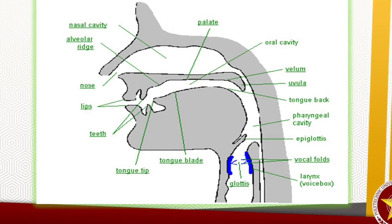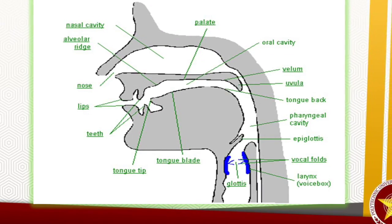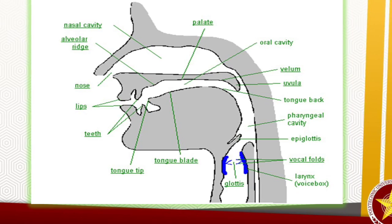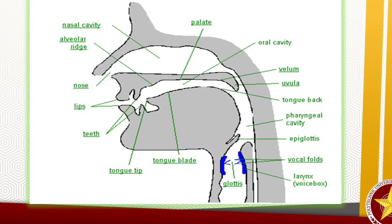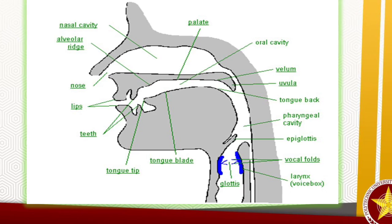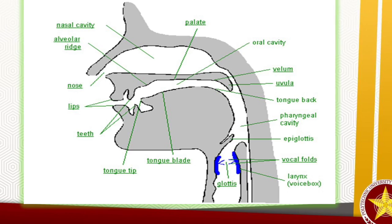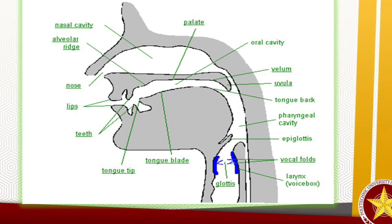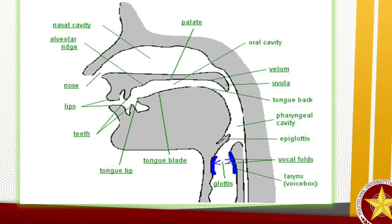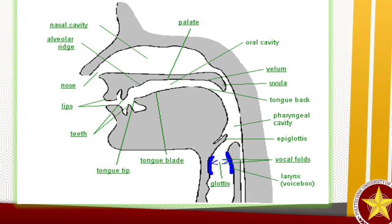Let us read the following parts of the speech organ: nasal cavity, alveolar ridge, nose, lips, teeth, tongue tip, tongue blade, palate, glottis, oral cavity, velum, uvula, tongue back, pharyngeal cavity, epiglottis, vocal folds, and larynx or voice box.